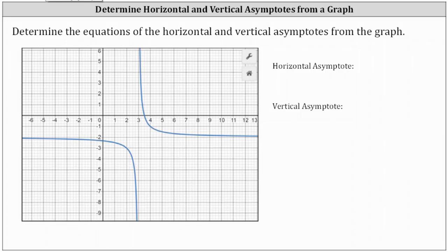We're asked to determine the equations of the horizontal and vertical asymptotes from the graph. A horizontal asymptote is a horizontal line a graph approaches and may or may not cross. A vertical asymptote is a vertical line a graph approaches and will never cross.